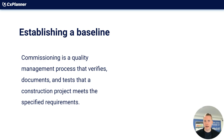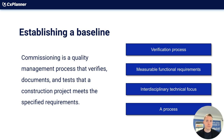First, we're going to establish a baseline. Commissioning is a quality management process that verifies, documents, and tests that a construction project meets the specified requirements. The commissioning process has something to do with quality, management, and it's a process. Normally, we can put four main topics on the commissioning process. It's a verification process — everything we do within the commissioning process must have some relation to verification. The verification can be on-site inspections as visual verification, review or scrutinizing of documents, and the final verification which most of us relate to — the testing, where you test that the system fulfills the requirements.